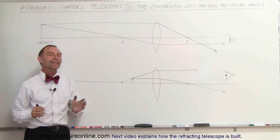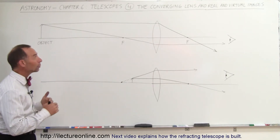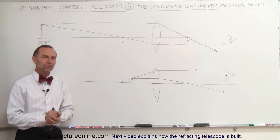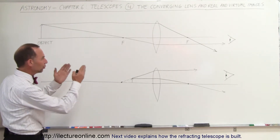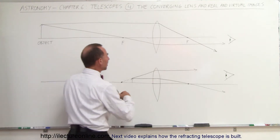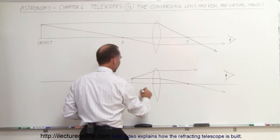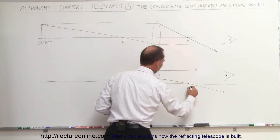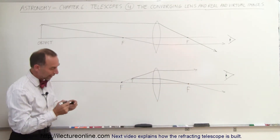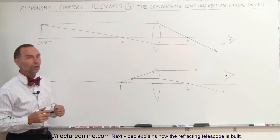Welcome to ElectroLine. Now let's take a look and see how converging lenses make real and virtual images. Here we have two identical lenses. They each have the same focal length. These are the focal points, and the distance from the lens to the focal points are, of course, the focal lengths. These are identical lenses with the same focal length.